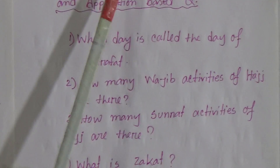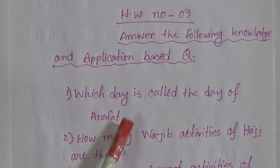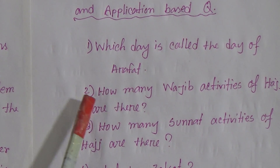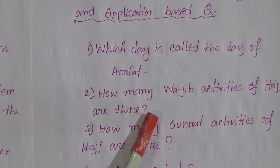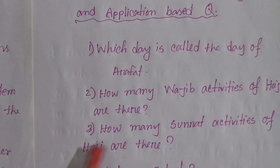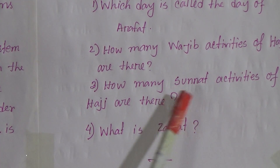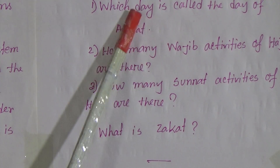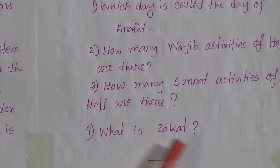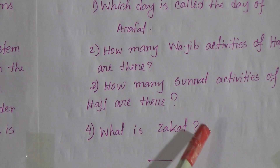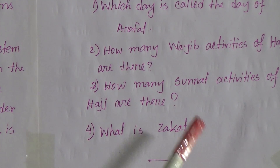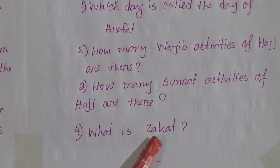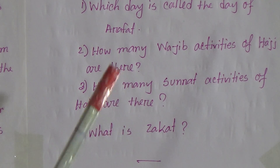Question 1: Which day is called the day of Arafat? Question 2: How many Wajib activities of Hajj are there? Question 3: How many Sunnah activities of Hajj are there? For question 3, you only need to mention the number of Sunnah, and only the number of Wajib. And which day — you have to write the day. These 3 questions are knowledge based. Now question 4: What is Zakat? You have to give the definition of Zakat according to your book. You can get it from the book or from my Lecture No. 7 — if you want to see the YouTube class, you can get the answer there. In the sheet, you have gotten the answer. You can write the answer with the help of your book. You can find it in Chapter 2, the Zakat lesson.